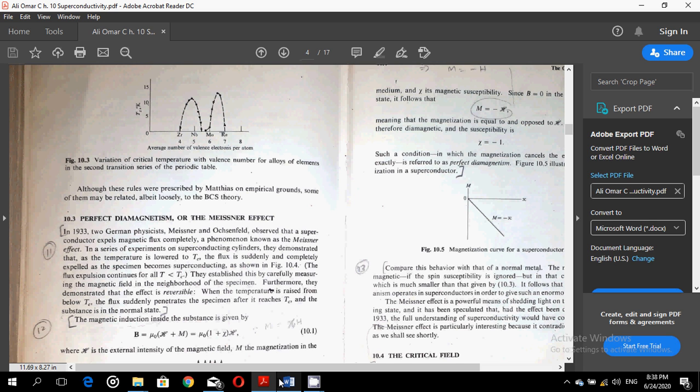Now we are going to study some of the properties of superconducting solids. In 1933, two German physicists, Meissner and Ochsenfeld, observed that a superconductor expels magnetic flux completely, a phenomenon known as the Meissner effect. In a series of experiments on superconducting cylinders, they demonstrated that as the temperature is lowered to Tc, the flux is suddenly and completely expelled as the specimen becomes superconducting as shown in Figure 10.4.